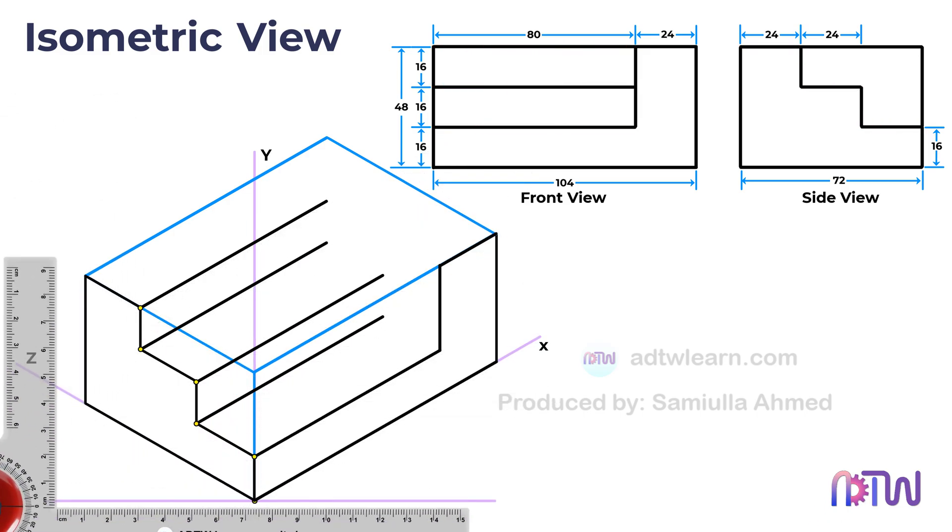After the previous step, we notice that this line in the side view starts from this point in the isometric view. So, we can start drawing a line parallel to the Z axis from this point up to the intersecting line.